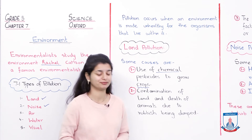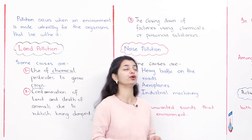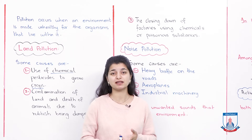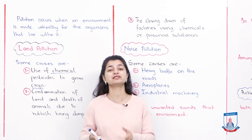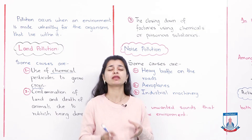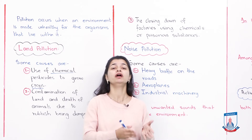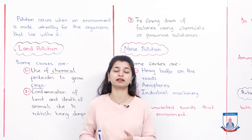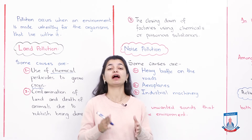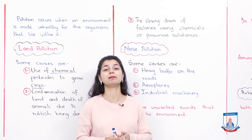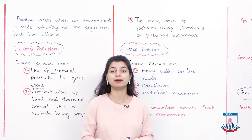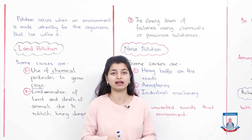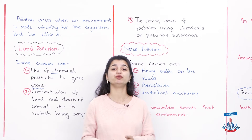The third cause of land pollution is the closing down of factories that use chemicals or poisonous substances. In factories, chemicals and poisonous substances are used for making things. Waste products that can't be used must be dumped somewhere, often on the sides of the factory. When a factory closes down, the whole land around it can become contaminated by these poisonous substances, making it unfit for crops or any other use. This is land pollution caused by factory closure.